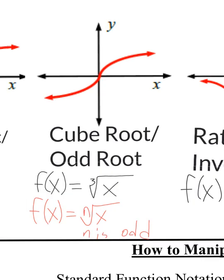The next function is the cube root graph. It makes this slanted S-style graph. There's a little 3 to denote the cube root inside the checkmark part of the radical. If I replace that with a 5, 7, or 9, it'd make a similar looking type of graph. So we just call it an odd root function — cube root slash odd root.